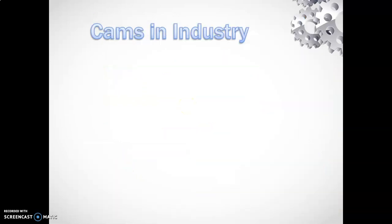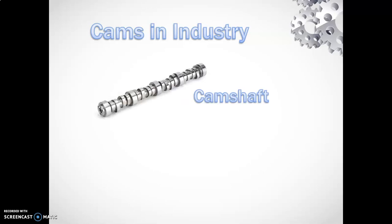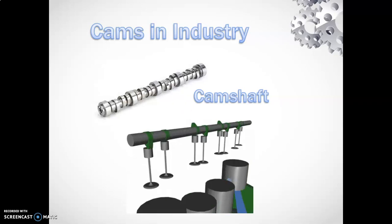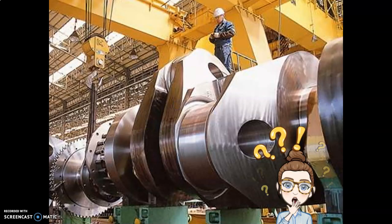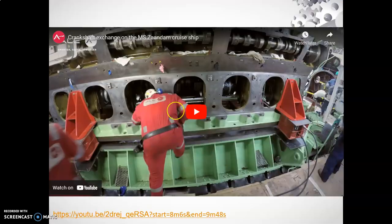Cams have important uses in industry, mainly as camshafts, which is a number of cams on a shaft or axle. They're really important in engine blocks and work in conjunction with pistons. Here is an extremely large camshaft used in a cruise liner. In this short video clip, it shows another large camshaft being removed and replaced with a brand new one. It takes about a dozen engineers an entire day.